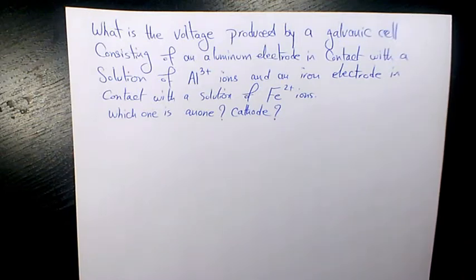What is the voltage produced by a galvanic cell consisting of an aluminum electrode in contact with a solution of Al³⁺ ions and an iron electrode in contact with a solution of Fe²⁺ ions? Which one is anode, which one is cathode?